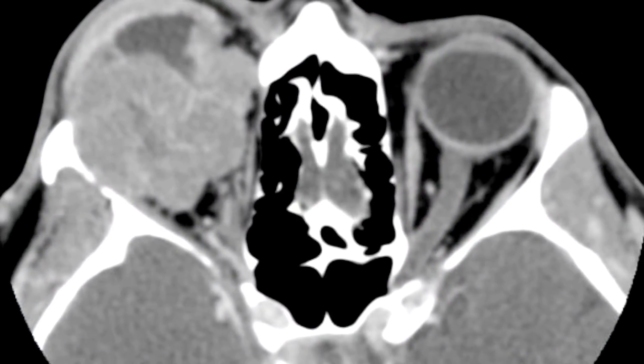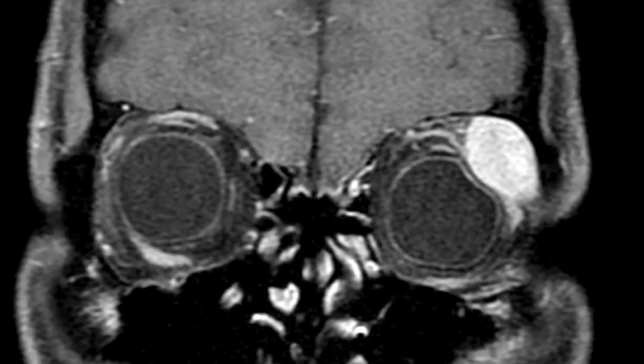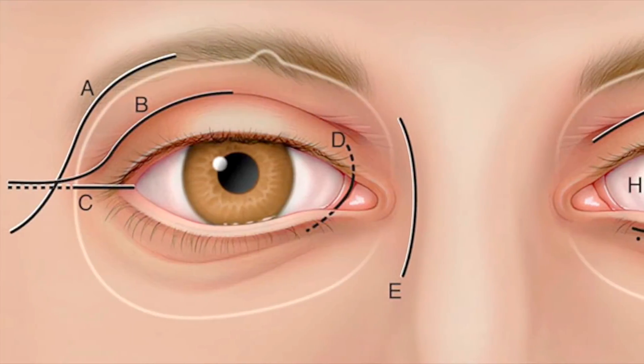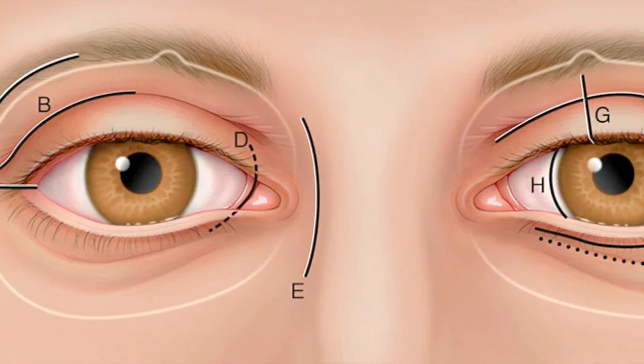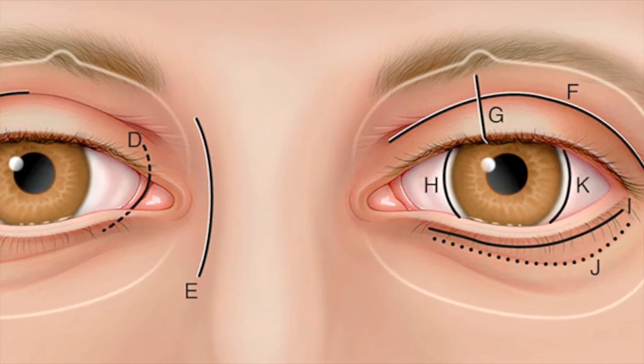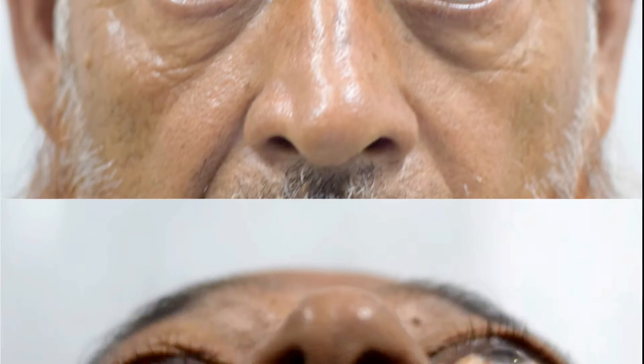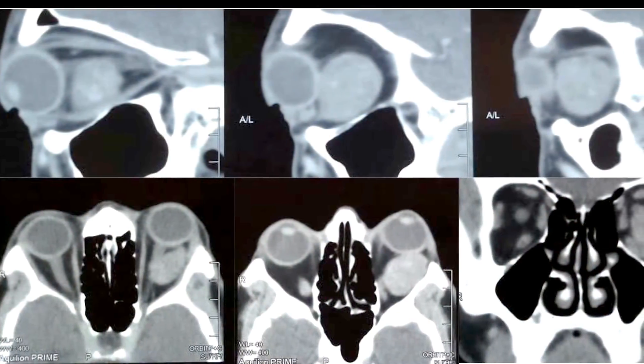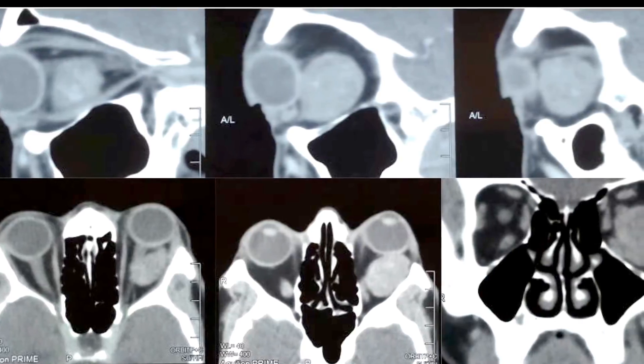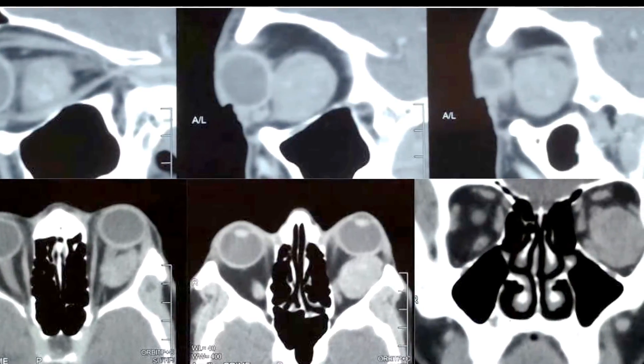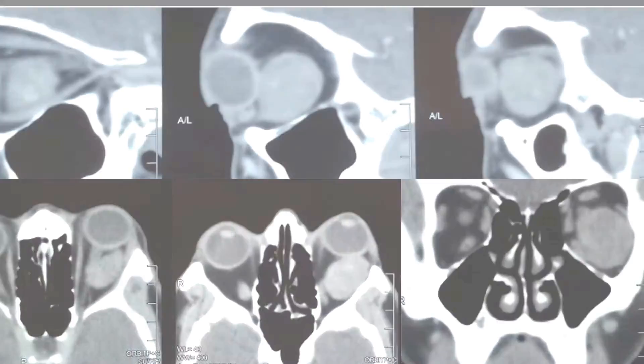Orbital tumours are seen at different sites within the orbit. The size, location, and likely etiology decide the most appropriate route for surgery. There are different approaches to access the orbit. In this video, we will be discussing an anterior orbitotomy using the transconjunctival route in this 60-year-old male who presented with a 3-year history of left-sided proptosis. Imaging shows a well-circumscribed intraconal mass located inferolaterally in the left orbit pushing the optic nerve upwards.